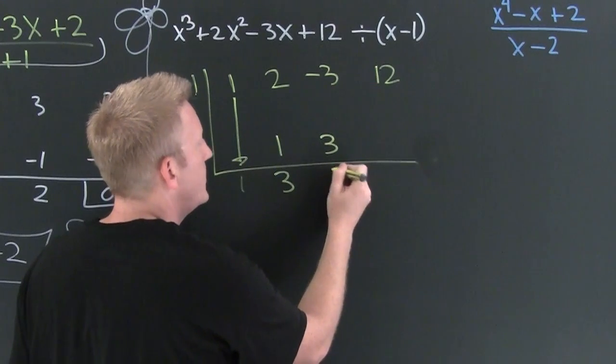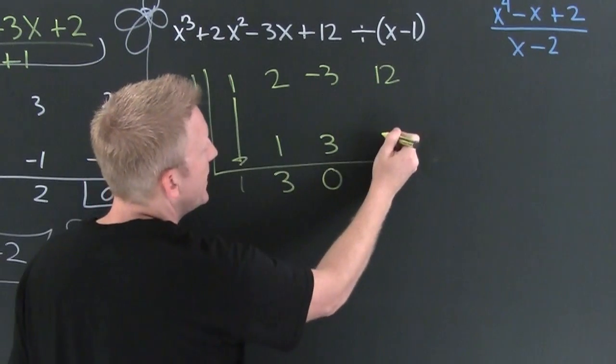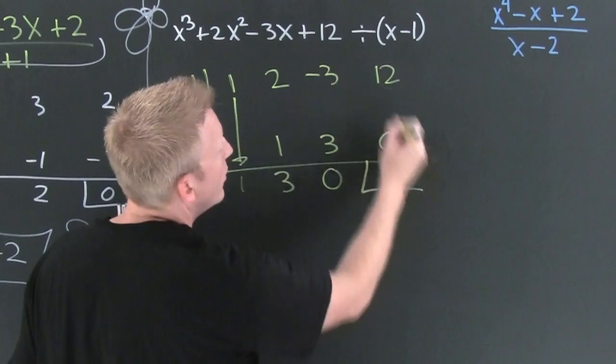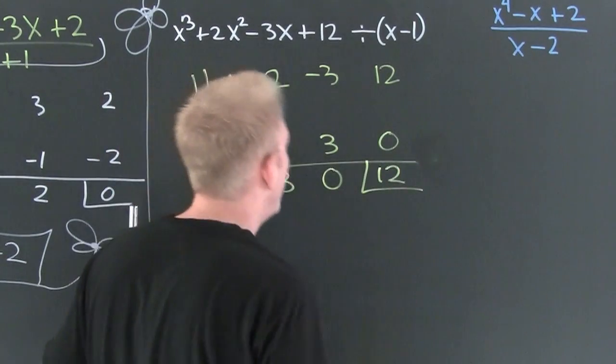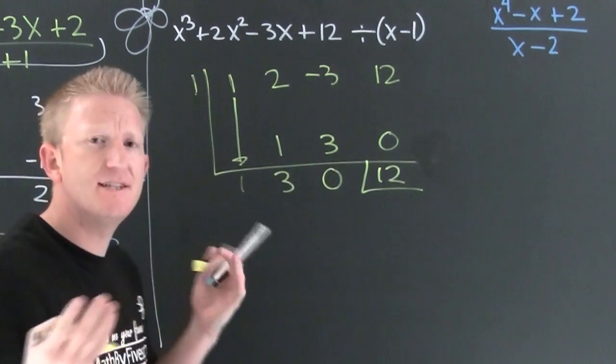None. This one times that one, put it there. Zero. And you got 12. Oh no. What does this mean? Let's go through it.